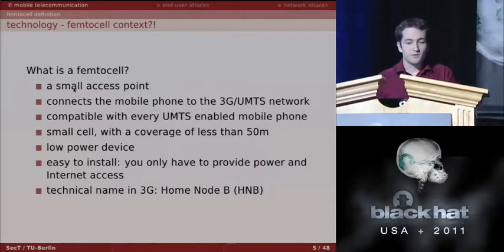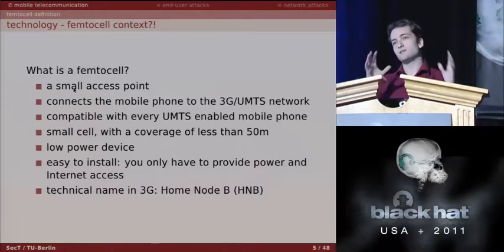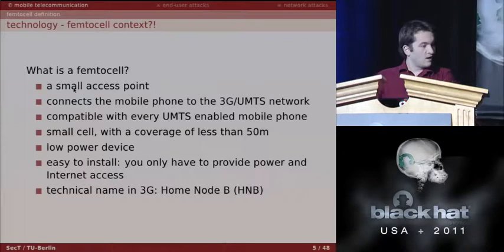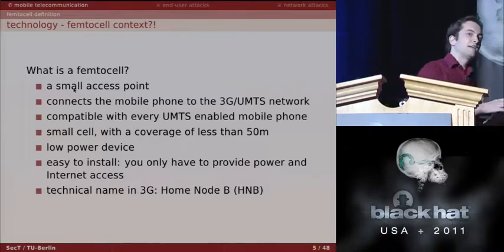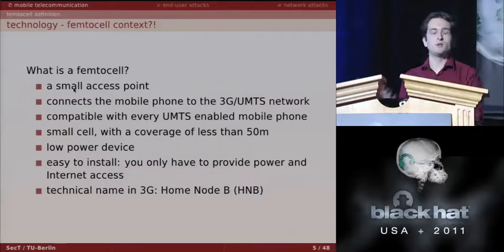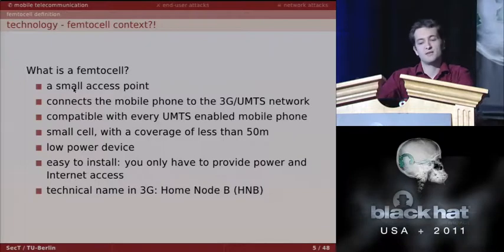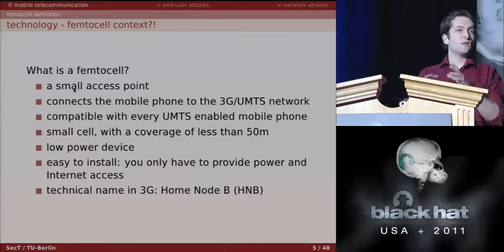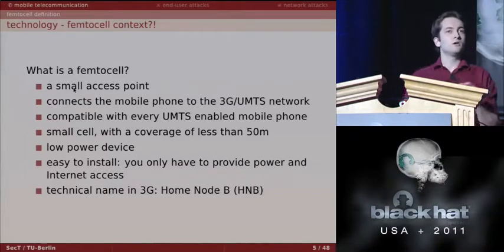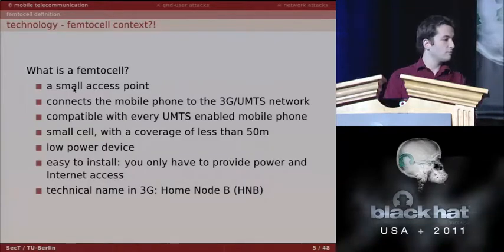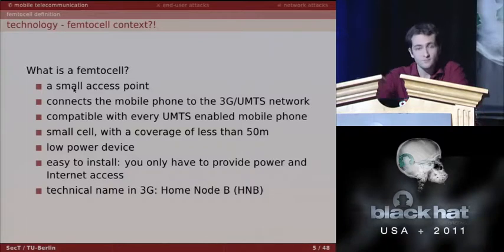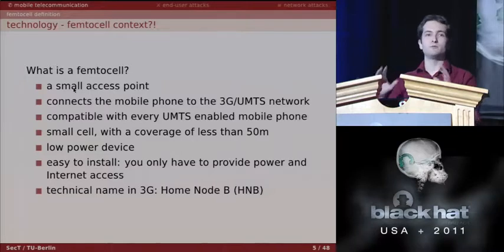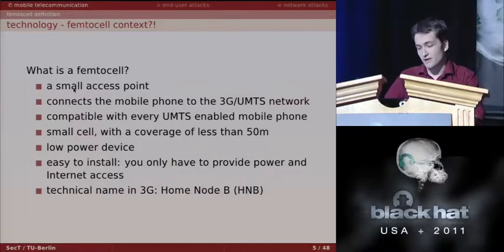Femtocells are small access points — the smaller version of the big roof antennas. They connect to the 3G operator network and are UMTS-capable, so every phone can connect to them without any Wi-Fi. Coverage is only about 15–25 meters. They're easy to install: the user buys it from the operator, plugs in power and internet, and the femtocell automatically connects to the home operator. The technical name in 3G for femtocells is 'Home Node B' (HNB), which we'll use in diagrams.